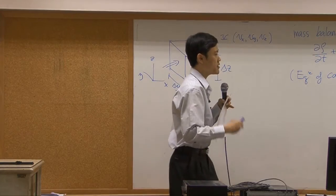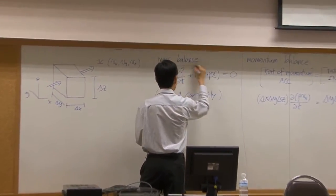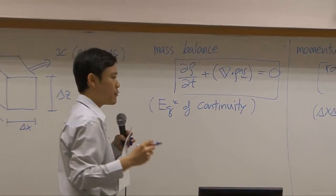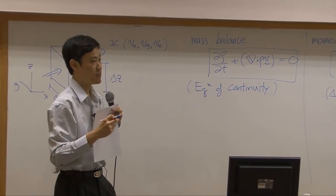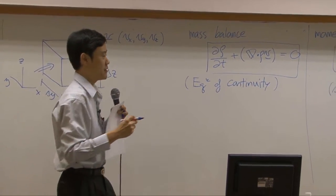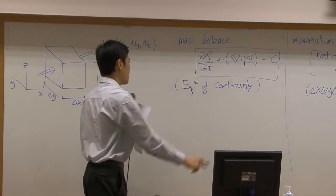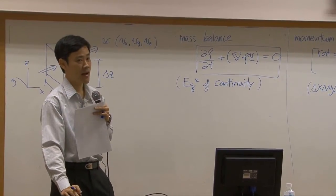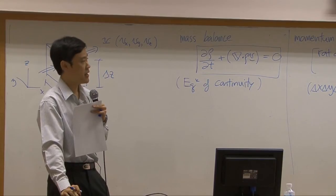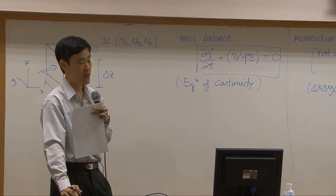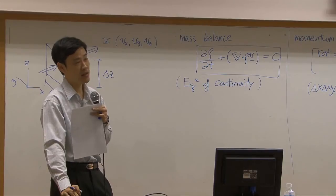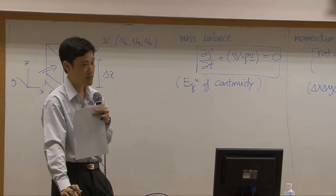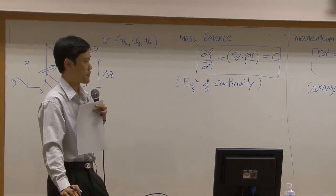Once you set up the mass balance, you end up with this equation. And this equation is a very important equation. Any equation with a name is supposed to be important. So this one has a name, equation of continuity. By the physical meaning, it is a mass balance. If you apply the equation of continuity, that means you set up the mass balance around your system.